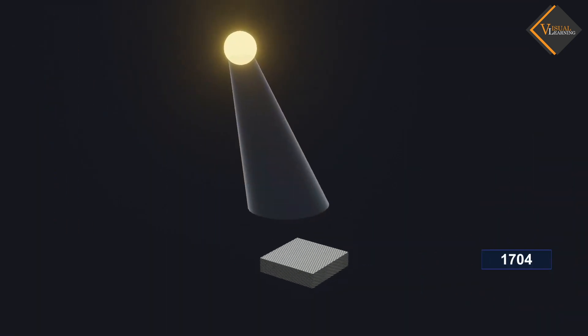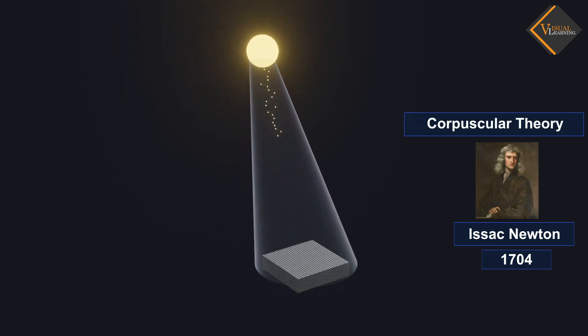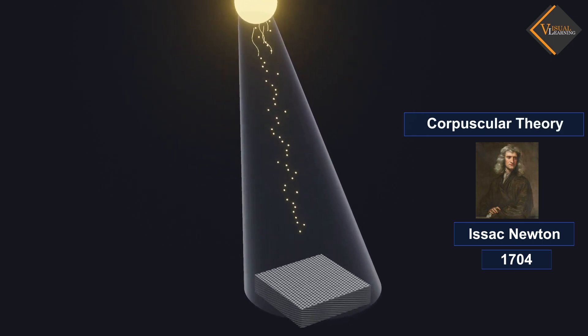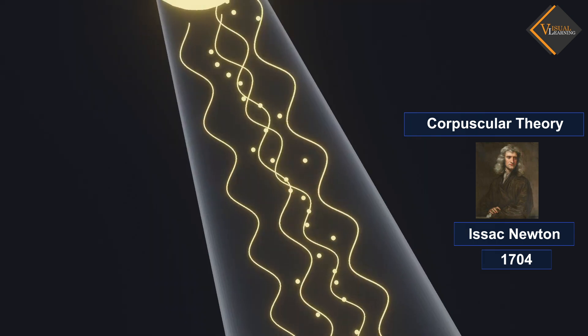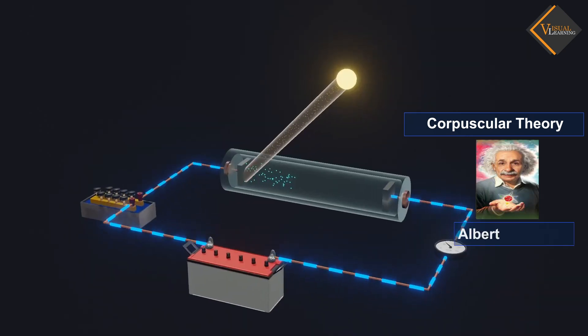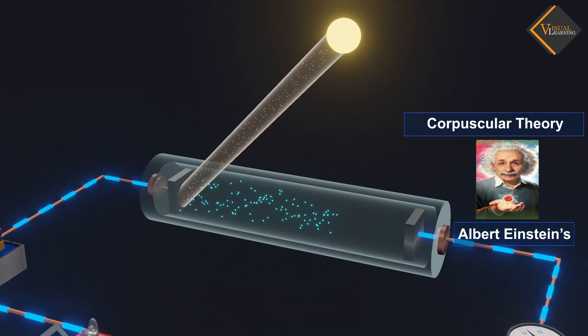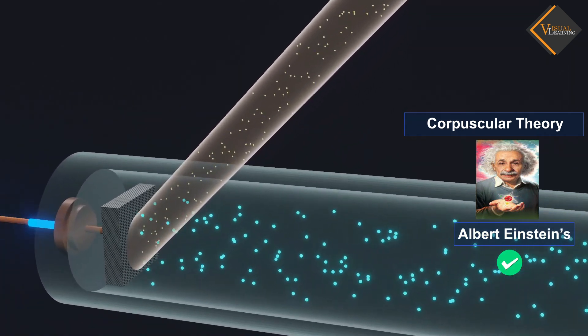In 1704, Isaac Newton formulated the corpuscular theory in which he explained that light has both wave and particle nature and the particles in light are called photons. Using this theory, Albert Einstein conducted experimental studies on the photoelectric effect and explained it, for which he received the Nobel Prize.